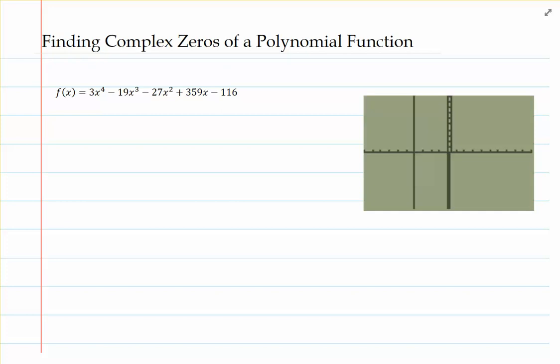So our polynomial function is 3x to the fourth minus 19x cubed minus 27x squared plus 359x minus 116.